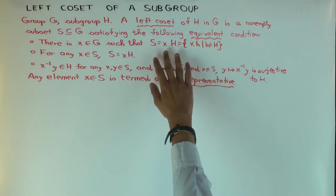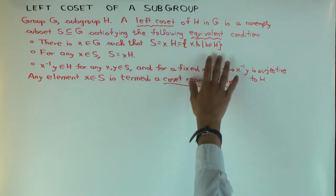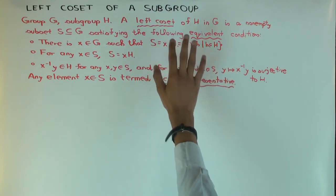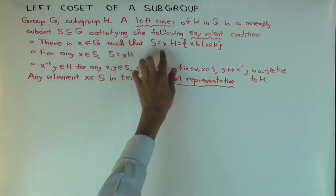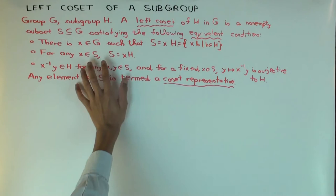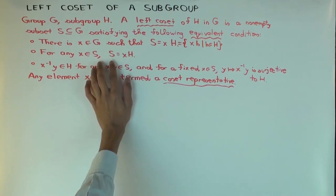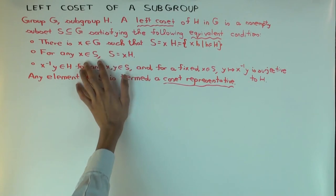So a left coset is any set of the form xH, where H varies over H and x is some element of G. There are in fact many equivalent ways of describing a left coset. One way is you can write it in the form xH. Another equivalent definition says that it's actually of the form x'H for whatever element x' in the subset you pick.